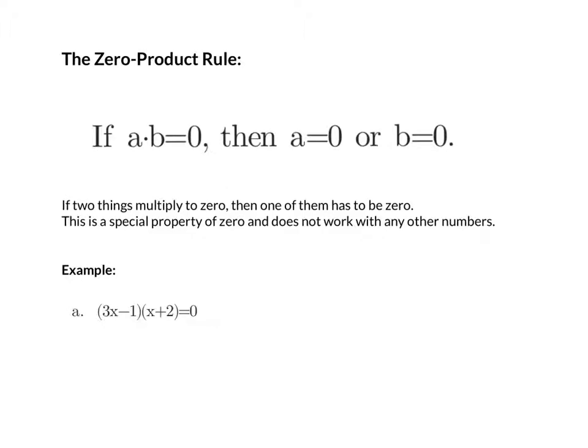Solving quadratic equations involves use of something known as the zero product rule. The zero product rule says if you have two things multiplying to equal zero, then either the first one or the second one has to equal zero. This is a special property of zero and does not work with any other numbers.